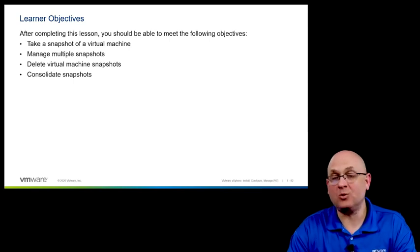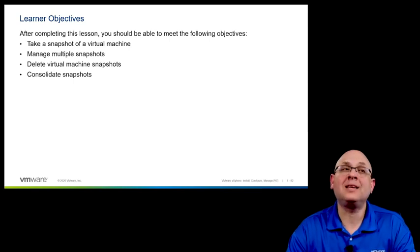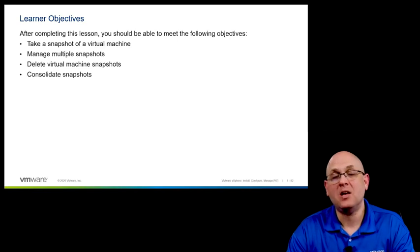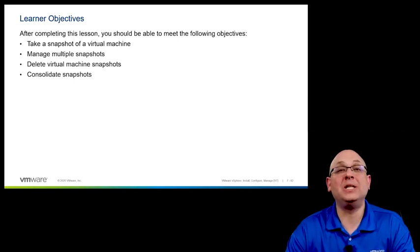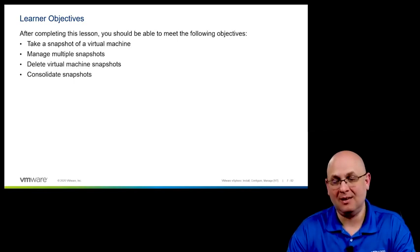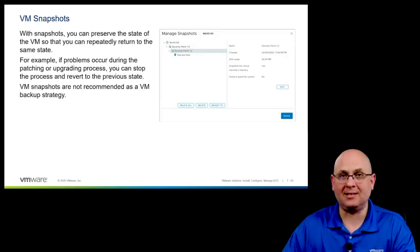Here in Lesson 7 of Module 7, we're going to look at virtual machine snapshots. These are a widely misunderstood concept within vSphere, so part of my job here is to demystify the concept of virtual machine snapshots — how they work and why we use them. We're going to be taking snapshots of virtual machines, looking at managing multiple snapshots, what it means to delete a snapshot, and consolidating snapshots.